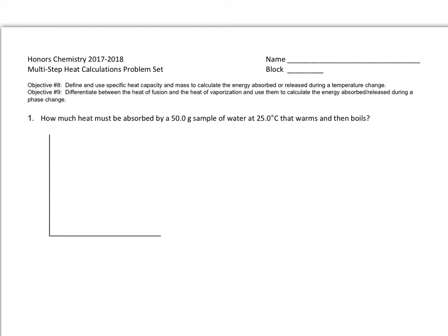So in the first problem of the multi-step heat calculations problem set, you are asked how much heat must be absorbed by a 50 gram sample of water at 25 degrees Celsius that warms and then boils. We see that this is heat that is absorbed, so we know that our answer will be positive. And then I gave you a set of axes so you could sketch out the heating curve or the cooling curve as it applies to the problem. This is going to be a heating curve because we are going to warm and then boil our sample of water.